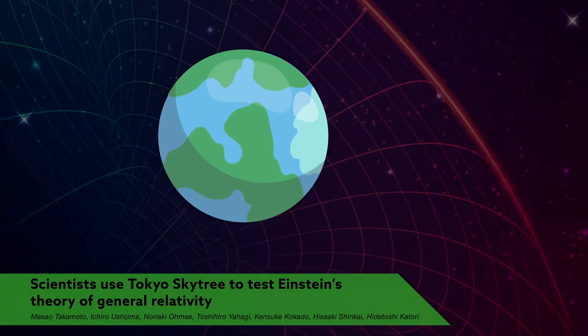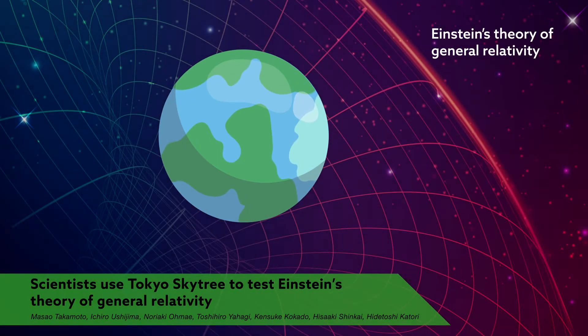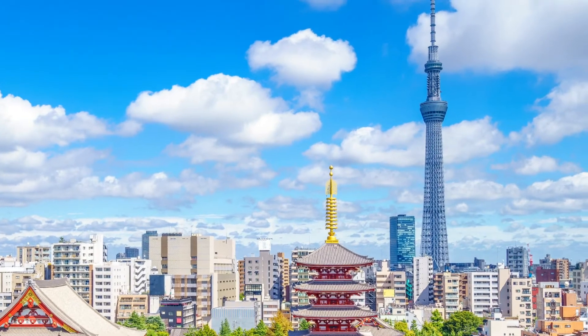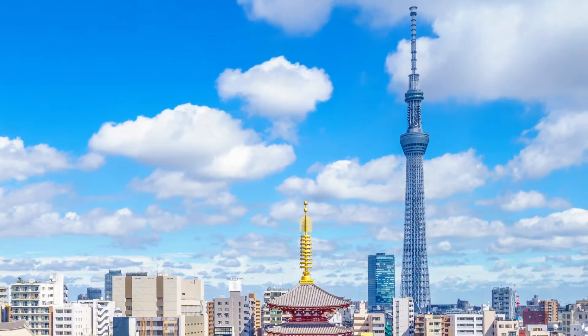Scientists have done it again. They've verified Einstein's theory of general relativity using real-life experiments. The latest group to do it is led by researchers at the RIKEN Center for Advanced Photonics and Cluster for Pioneering Research.